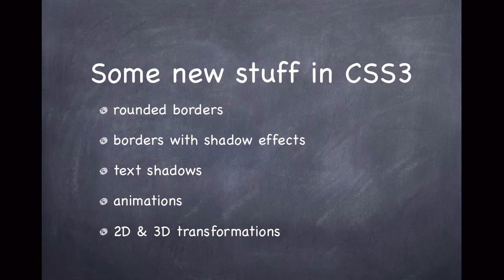Rounded borders — you had initial borders which were only square or rectangle borders, but you can use the border-radius property to make them round. You can have borders with shadow effects, you can have text with shadow effects, and you can have animation — like a ball that goes from left to right or bounces.